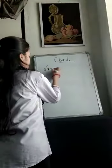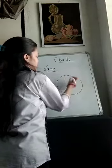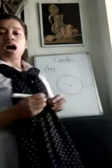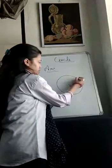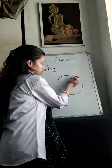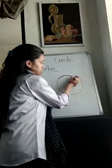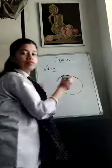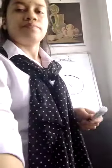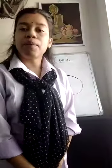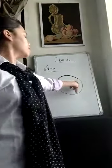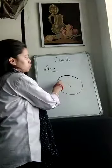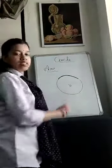Now next is arc of a circle. First we draw a circle, then make a fixed point O. Any part of a circle is called arc. As you can see, I make this part darker, so it is the arc of this circle.